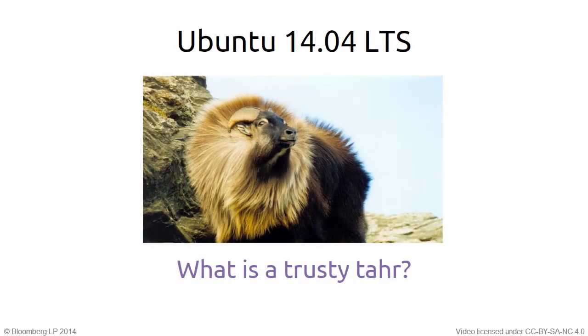So Tahr is — there are three species of large Asian ungulates related to the wild goat.